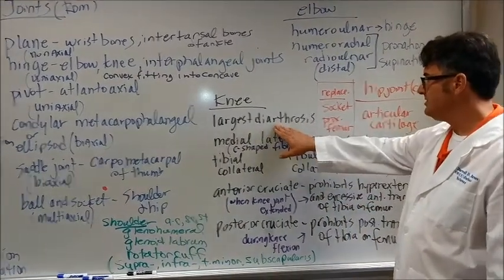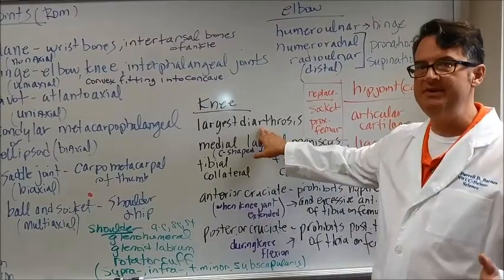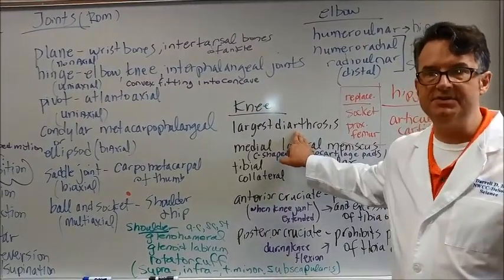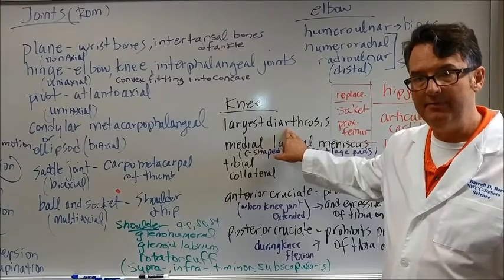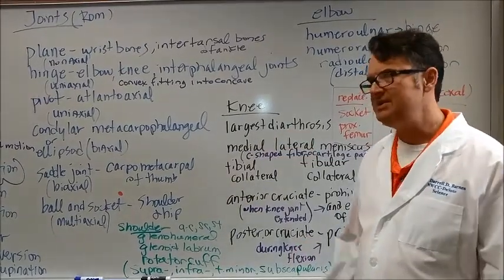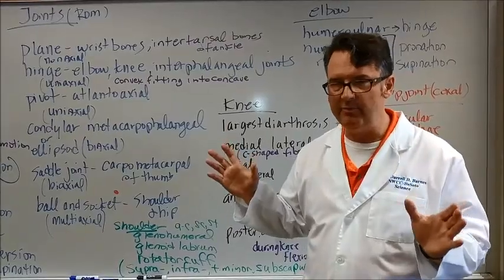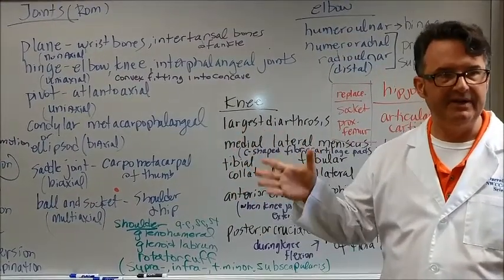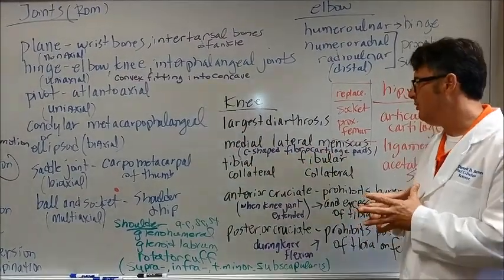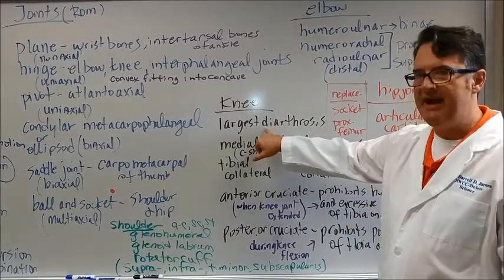The knee is the largest diarthrosis in the body. Remember we said that diarthrosis means freely movable. Well, it doesn't mean—let me rephrase that. It probably doesn't mean freely movable, but it is a freely movable joint. That's probably what I should say. What does di mean by the way? Two.